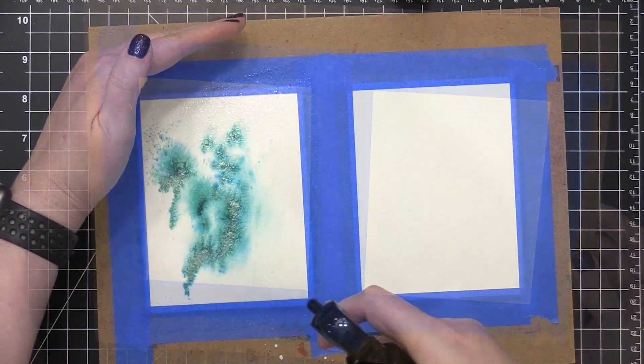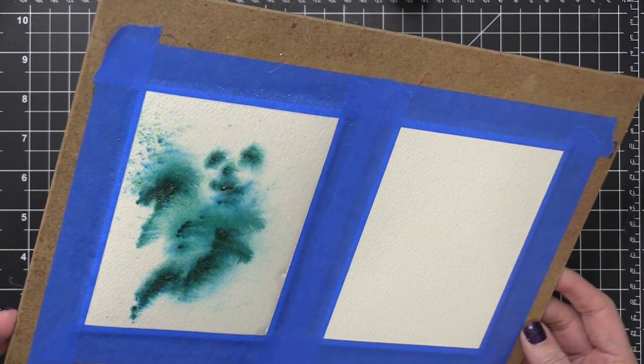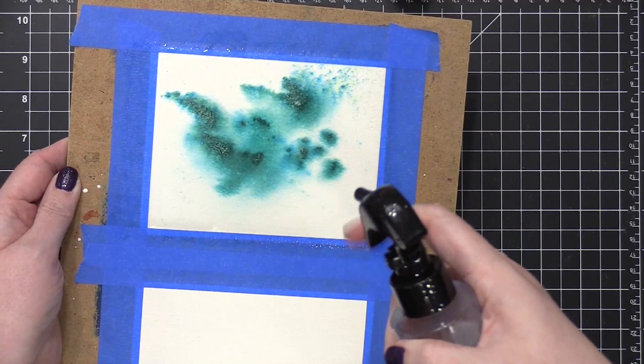When you're doing a technique like this, I really recommend taping down your watercolor paper to a hard surface that you can pick up. You can use a clipboard. You can use a hardboard like this. Anything that you can pick up and kind of tip and tilt so that you can really get that water moving and get all of those paints moving.